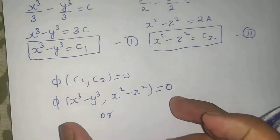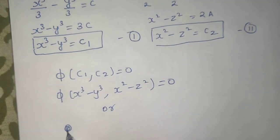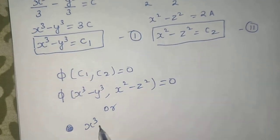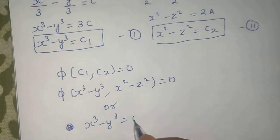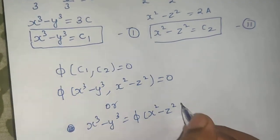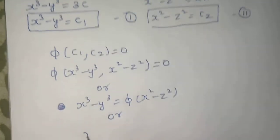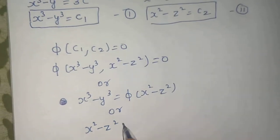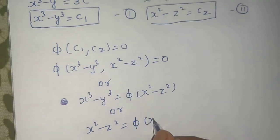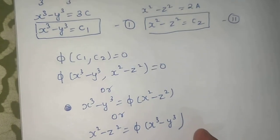Or this is one format of solution. You can also write solution in this form: x cube minus y cube is equal to phi of x square minus z square. Or there is another third method that is x square minus z square is phi of x cube minus y cube. So there are three different ways to report your final answer.